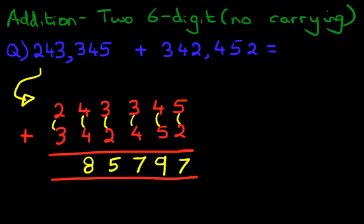And finally the hundred thousands column, 2 plus 3 is 5. And we have our answer. Let's write it down here. 585,797.